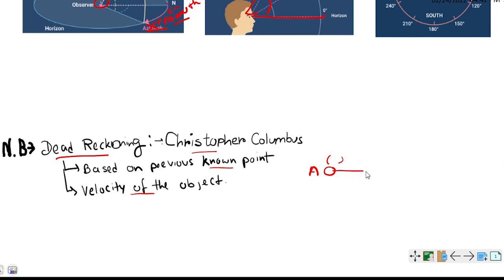If we know the position of A and our object is moving at a speed of five kilometers per hour, then after two hours the position of the object will be somewhere at B. And we can define the position of B with respect to A, the previous point. The position of B will be 10 kilometers east of A, and that's how the dead reckoning system works.